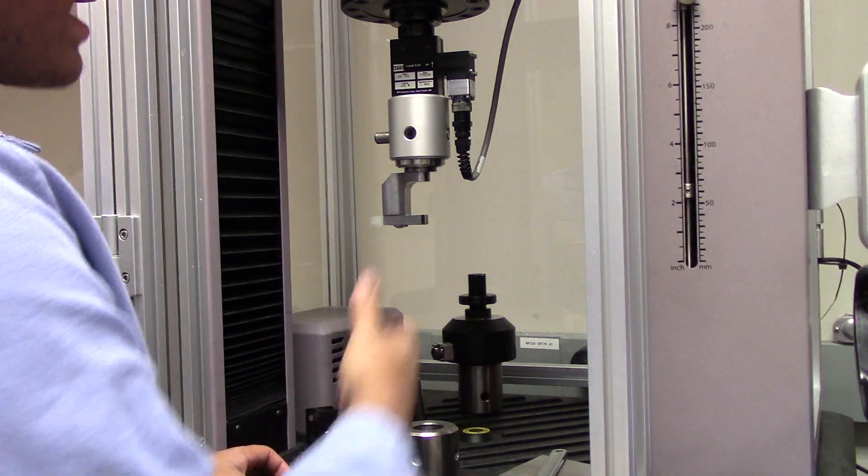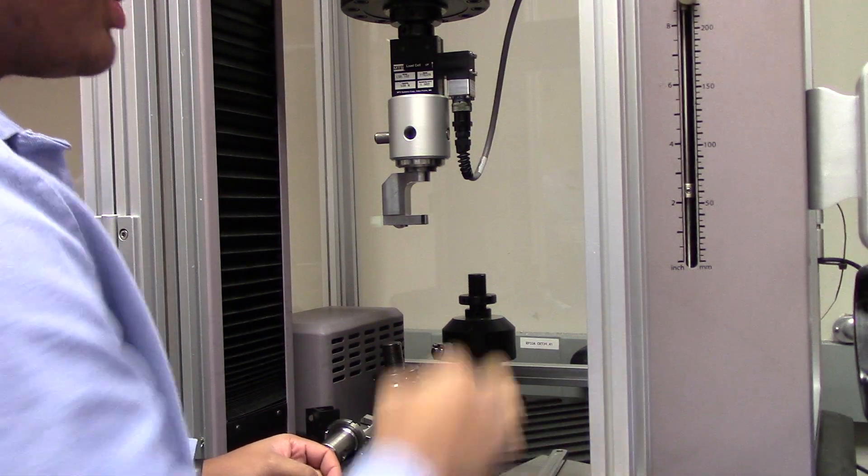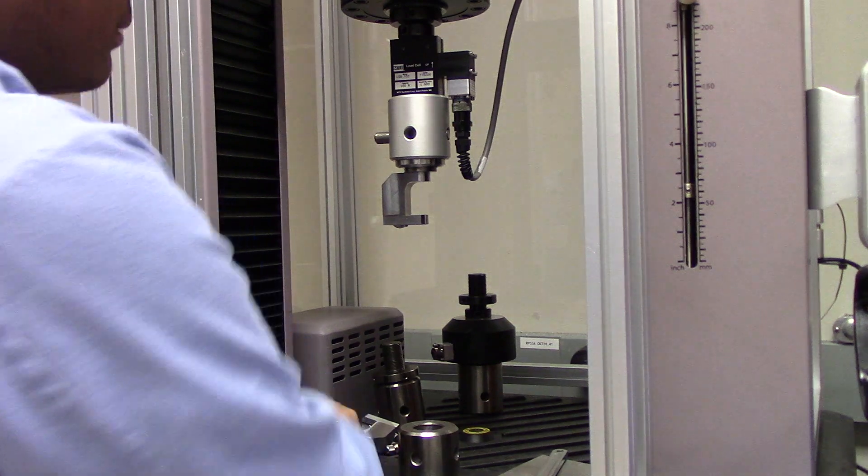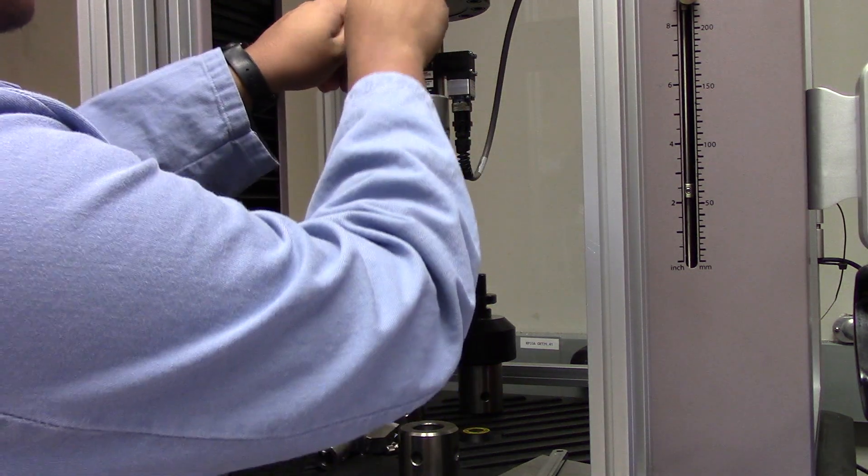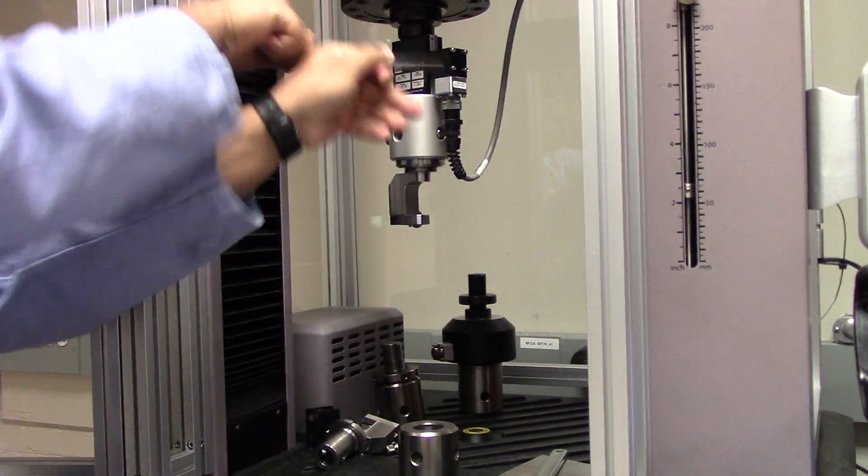Moving on to the upper grip, the first thing to make sure of is that the power is off, as we don't want to be handling any live wires. As was shown just earlier, place one rod into the lower lock nut, and one into the upper lock nut. While holding the lower lock nut steady, rotate the upper lock nut clockwise to loosen the system.